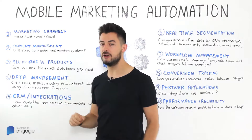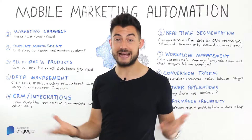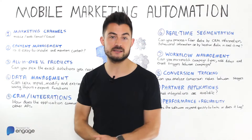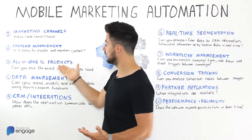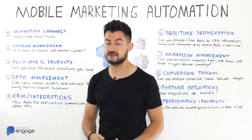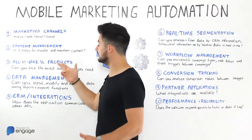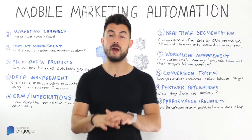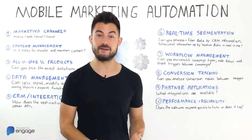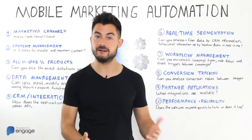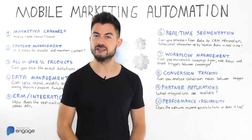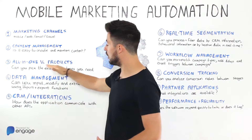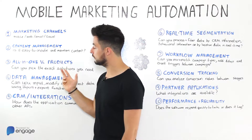Number three: consider whether you want a gigantic all-in-one bundle with a massive cost implication, or whether the vendor offers a number of products or modules you can choose from based on your needs that click together to form an integrated suite. Or you could go for the full 747 jumbo jet of an MMA solution — everything included, probably at a high annual cost. All-in-one versus modular products.